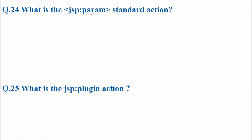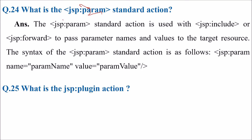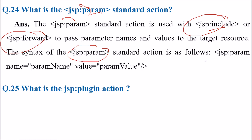What is the JSP param standard action? This action is used with JSP include or JSP forward to pass parameter names and values to the target resource. The syntax is: jsp:param name equal to param name and value equal to param value.